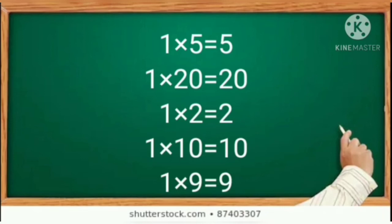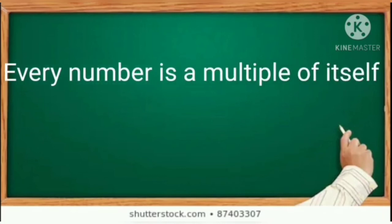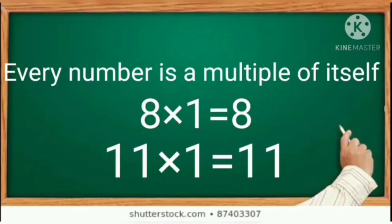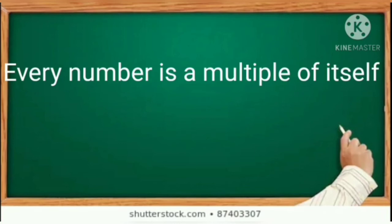And 9 is the multiple of 9, since 1 into 9 is equal to 9. Also, every number is a multiple of itself. That means 8 into 1 is equal to 8, and 11 into 1 is equal to 11. So any number multiplied by 1 gives the same number. We can see more examples in this table.